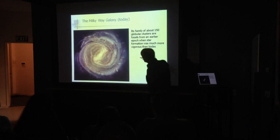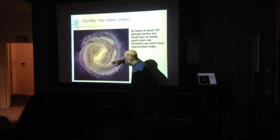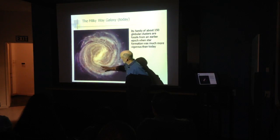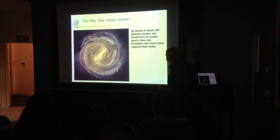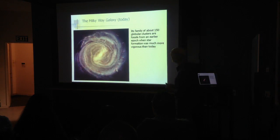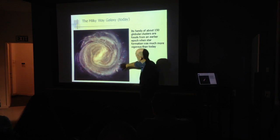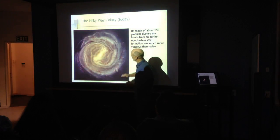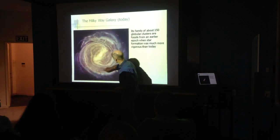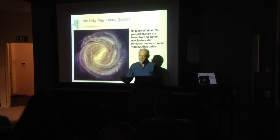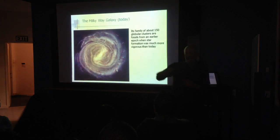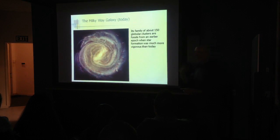As these waves pass through — it takes millions of years — they compress the gas, create instabilities in clouds of gas and dust, and trigger star formation, then they pass through. The areas in between are where the stars are a bit older; where the waves just passed are where stars are younger and brighter, giving that impression of structure.